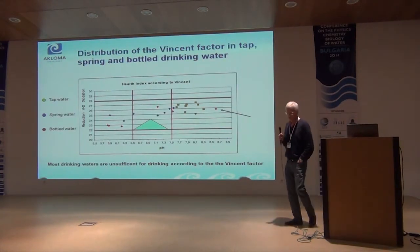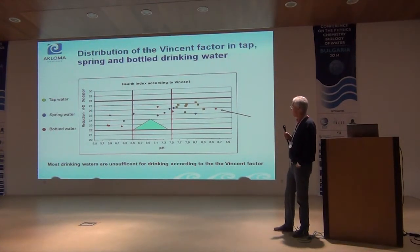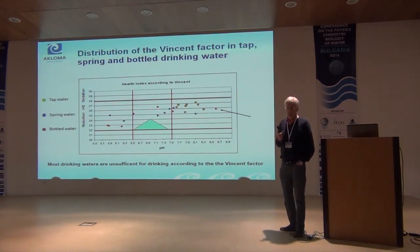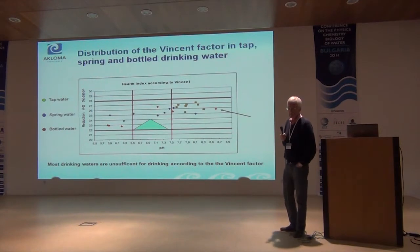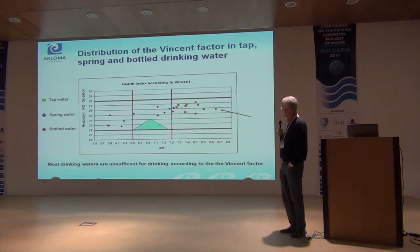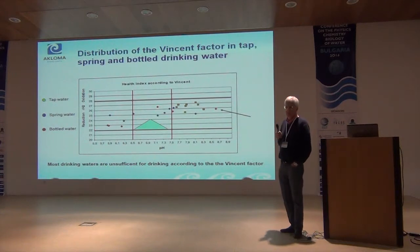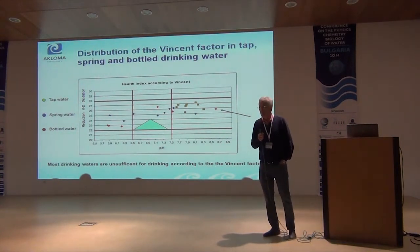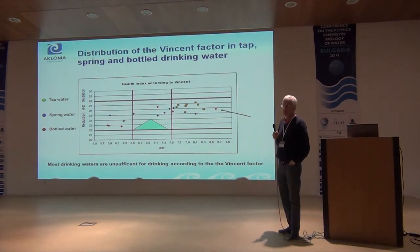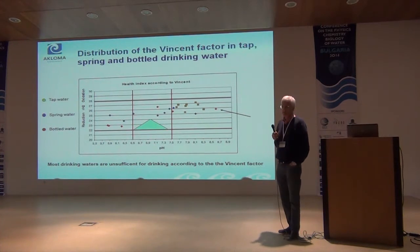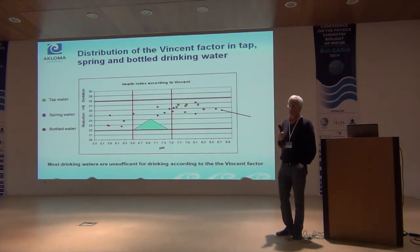Here we have the distribution of the Vincent factor in all three water types. There was no water located in the green triangle, so there was no optimal water according to the Vincent factor. We found four or five of them in the first sector, so they seem relatively good. Most remarkable perhaps is the tap waters — they are located in the fourth sector, all of them, clustering together even though collected from different areas in the district. I think this depends on all tap waters in Sweden being treated in a similar way, perhaps in most of Europe, based on chemical and health regulations. So I think the results indicate that they are not recommendable for human drinking according to the Vincent factor.